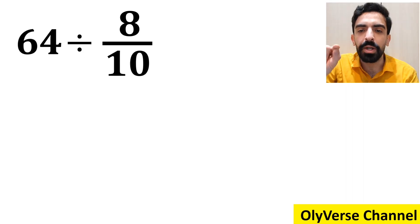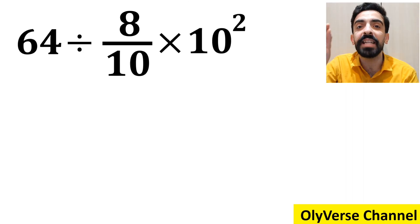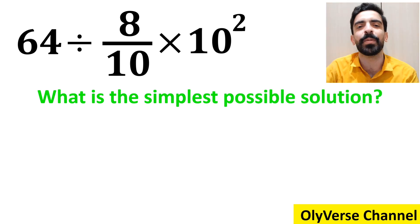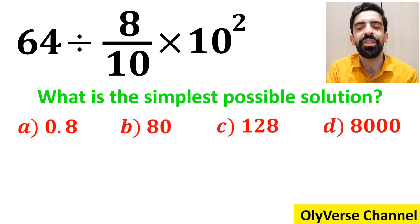If we have the expression 64 divided by 8 over 10 times 10 to the power of 2, then what is the simplest possible answer for this expression? Which option do you think is the correct answer to this question?